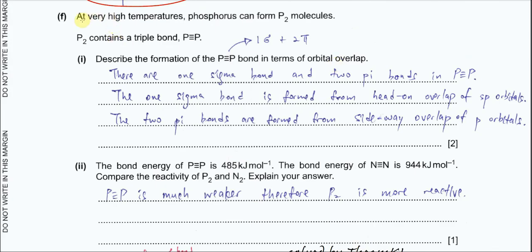Part F: At very high temperatures, phosphorus can form P2 molecules. P2 contains a triple bond like nitrogen. Part F1: Describe the formation of the bond in P2 in terms of orbital overlap. In a triple bond, there is one sigma bond and two pi bonds. The phosphorus atom undergoes SP hybridization to form the triple bond.